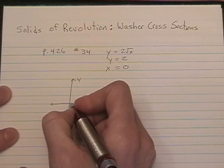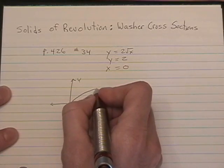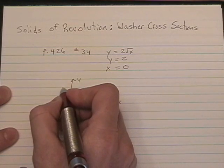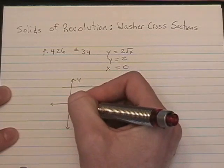y equals 2 square root of x is going to look something like this. y equals 2, the horizontal line, and of course x equals 0 is the y axis.